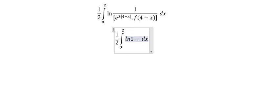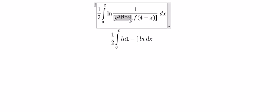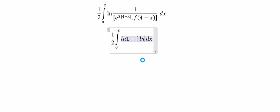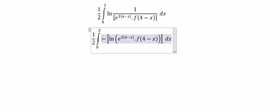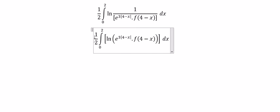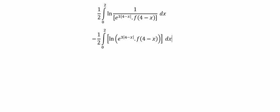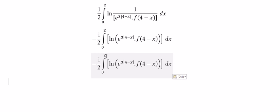Now you will get ln(1) minus ln of this one. Since ln(1) equals 0, we just eliminate it and put the negative sign in here. For ln of (4), you get 4 minus 2, which is about 2 — a positive number — so we don't need to use the absolute value here.